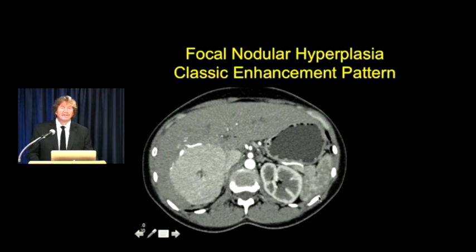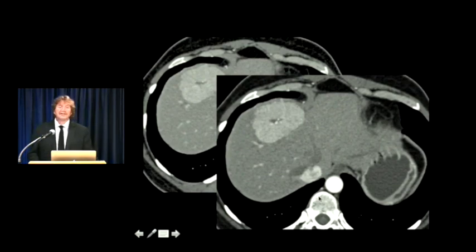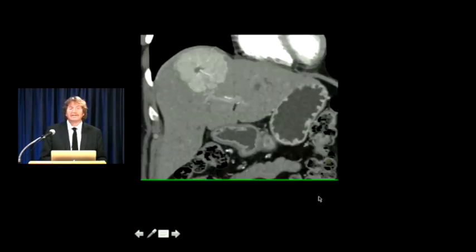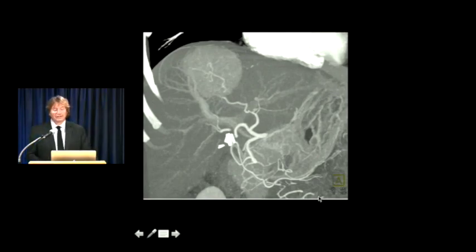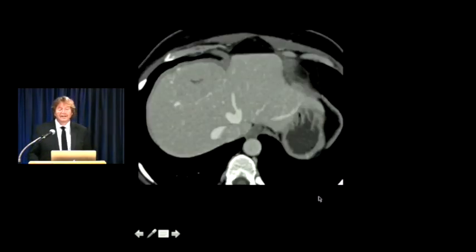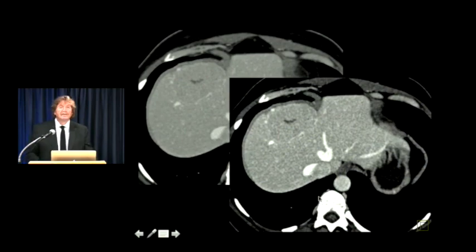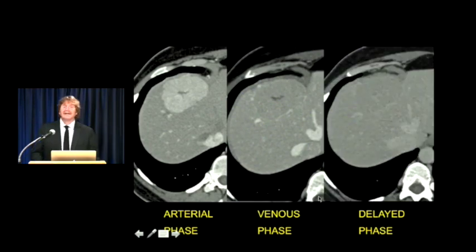FNH is most commonly solitary but can be multiple. Here's a nice example of two lesions looking identical, with the feeding vessel going into the center of each. Another case: central scar, homogeneous, attenuation identical to the IVC. You can see a second small lesion - the classic FNH. Carrying to another patient, the same lesion: central scar, homogeneous, hypervascular but only looking like the IVC. The feeding vessel goes right to the center, and on MIP the vessel is even better shown. As you go to venous phase, the lesion is harder to see - at delayed imaging you would have missed a 7 or 8-centimeter mass. So FNH is a very important lesion to recognize.